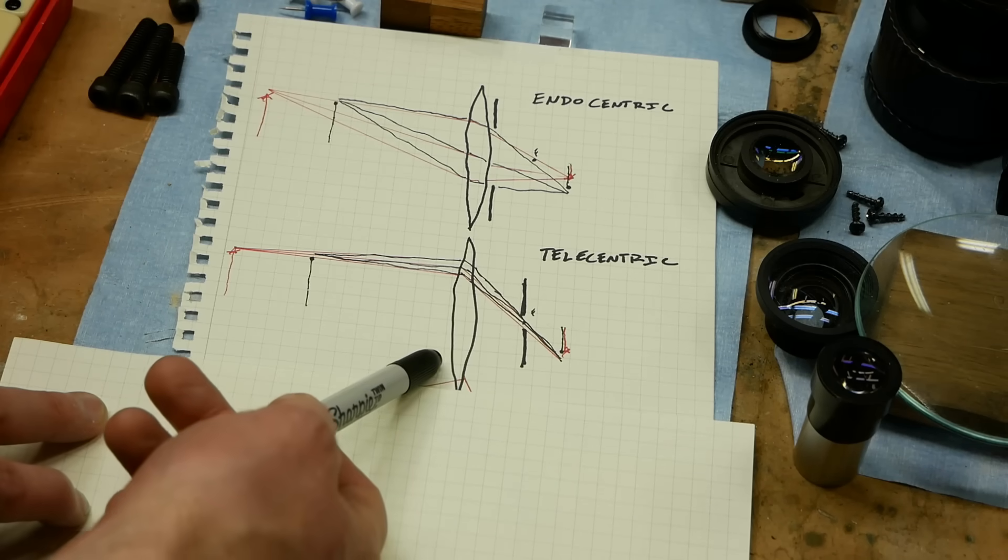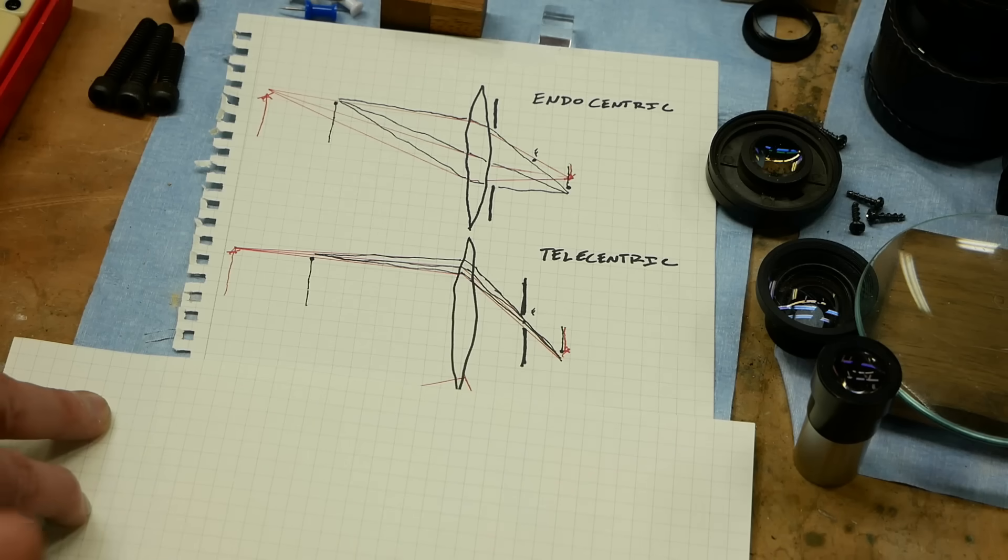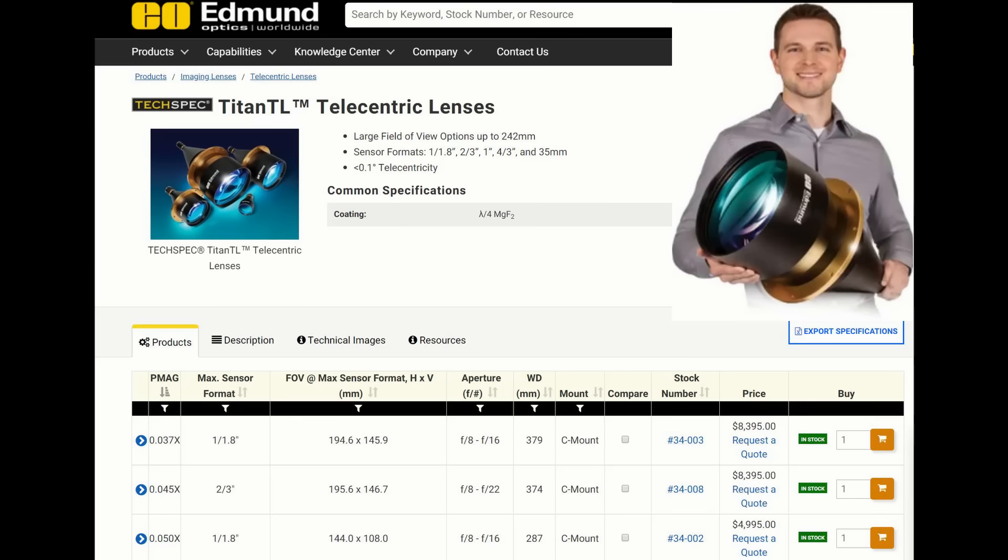So interestingly, your field of view in this case is only as big as the lens is, it's maximum, which is why the front elements of these telecentric lenses are so huge. Some of them are ridiculously large, like if you want to image a large object with a telecentric lens, it needs to be quite massive indeed, which is why we have this Fresnel lens here.